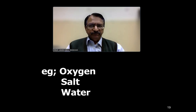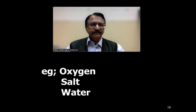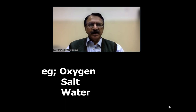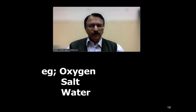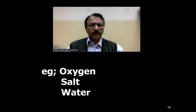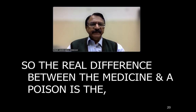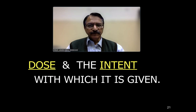For example, oxygen when in its normal concentration in air is physiological and doesn't harm, but if it is 100% or more concentrated, it can produce toxicity. Similarly, with salt and water — when there is excessive water, more than the concentration required in the human body, that can become toxic. So the real difference between medicine and a poison is the dose and the intent.